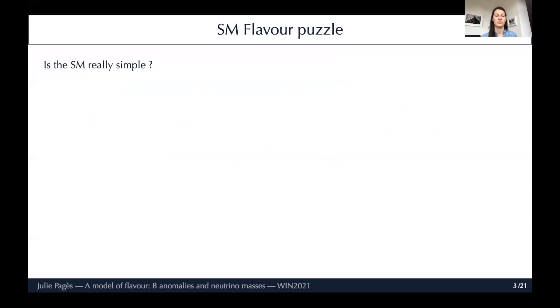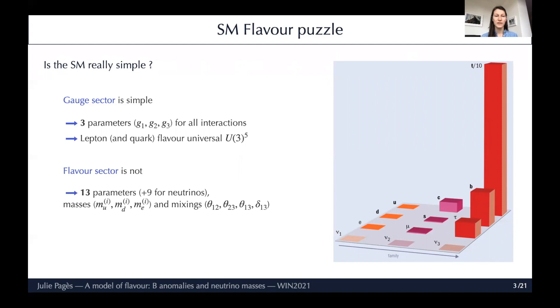Now I want to go even further and ask this question: Is the standard model really simple? The gauge sector certainly is. There are only three parameters - g1, g2, g3 - that can describe all interactions among gauge bosons and matter. Since all families have the same quantum numbers, we have lepton and also quark flavour universality in this sector, which we can describe by a U(3)^5 flavour symmetry. But the flavour sector is not so simple. It requires 13 parameters, and nine if we add neutrinos, to describe the masses and mixing present in the standard model.